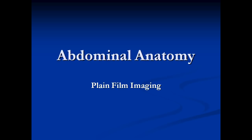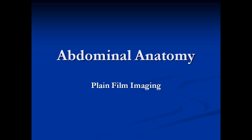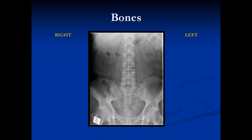Now we're going to take that anatomy from CT and try to see it on abdominal plain film imaging, which is a little more difficult. This is a plain film of the abdomen — a supine view. In the center we have the spine with lumbar vertebrae and disc spaces between them. This is the bony pelvis, the sacroiliac joints on each side, the hip joints, and the symphysis pubis.